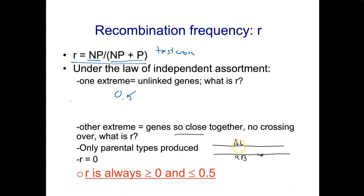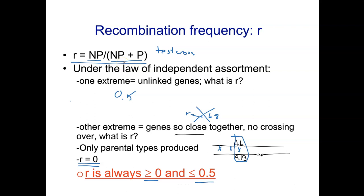But what if the genes are on the same chromosome and they're super close together — so close that crossover can never happen between the two genes? It's very rare, but if two genes are right next door to each other, the chance of a crossover between them is really small, and the R value we would calculate would be zero. So the value of R is minimum zero and maximum 0.5. If you calculate something like R = 0.68, that is wrong.